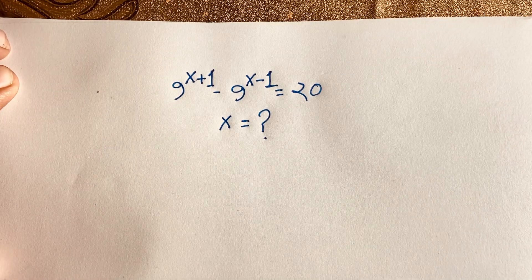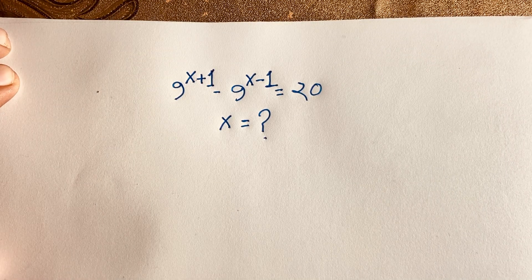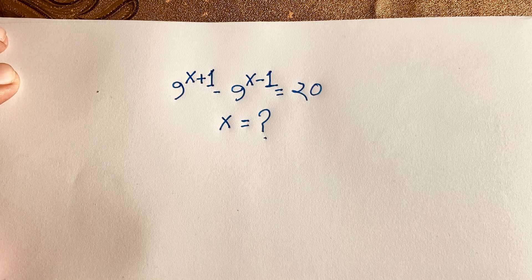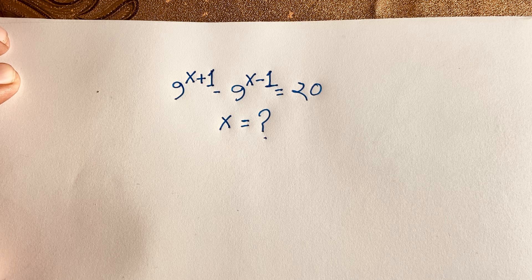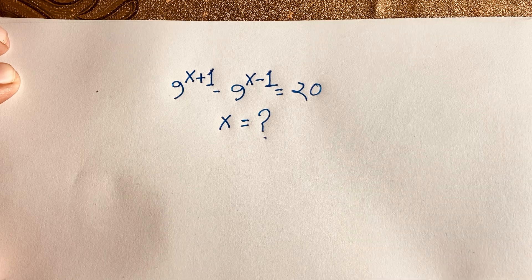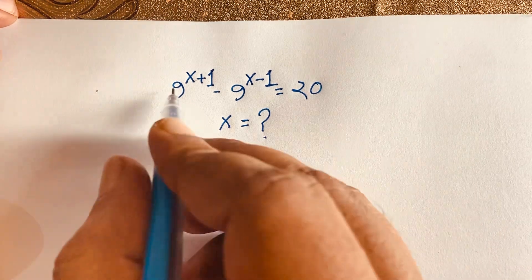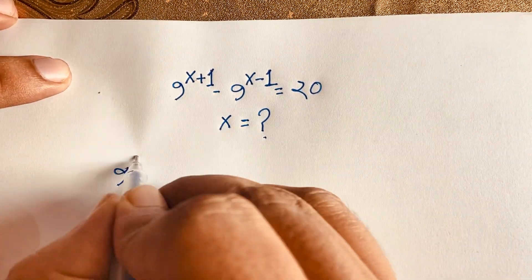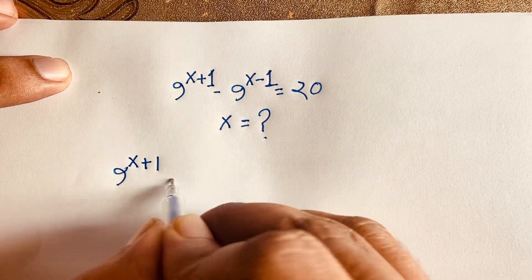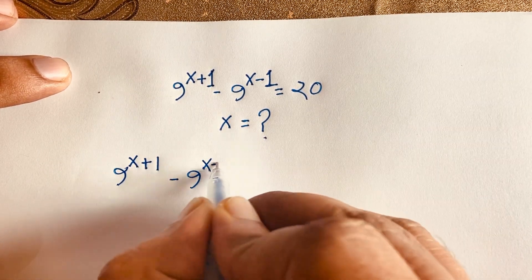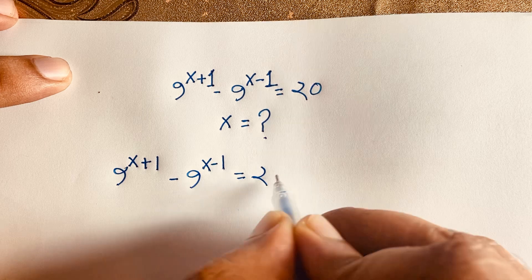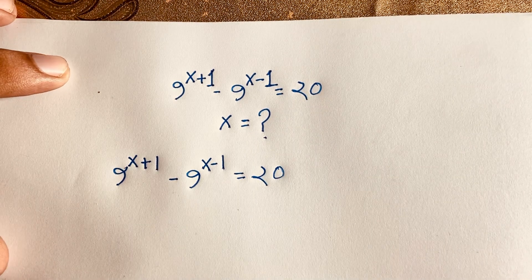Hello everyone. In this video we solve this interesting exponential equation. The question is 9 to the power x plus 1, minus 9 to the power x minus 1, is equal to 20. We find out the value of x in this exponential equation — how to solve this maths question.